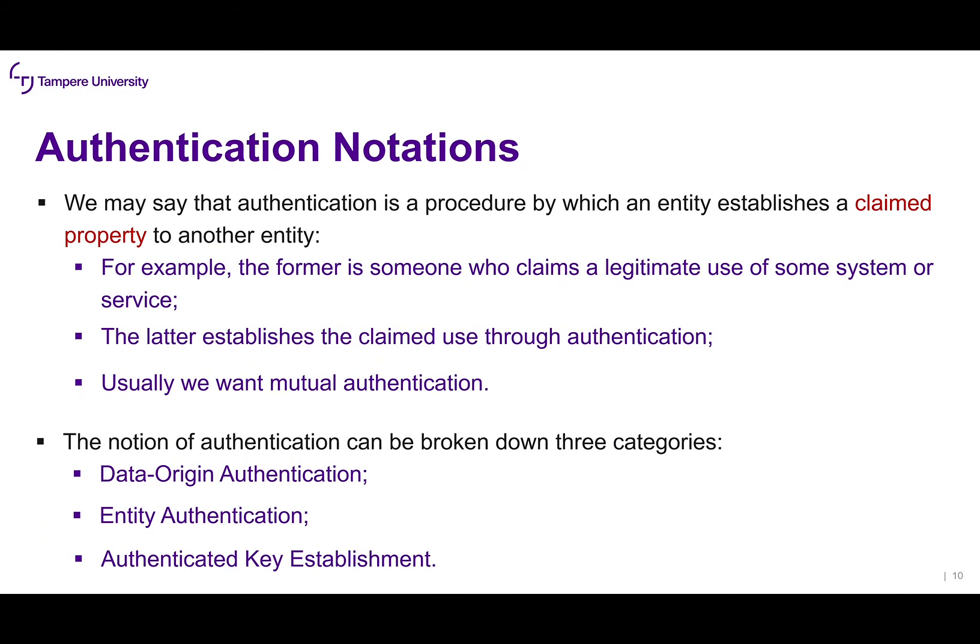Some authentication notations: authentication is a procedure by which an entity establishes a claimed property to another entity. For example, the former is someone who claims legitimate use of some system or service, while the latter establishes the claim through authentication. Usually we need mutual authentication — we'll see this when we describe TLS, for example, how you authenticate to the Gmail server but also how the service authenticates to you. Authentication can be broken down into three categories: data origin authentication, entity authentication, and authenticated key establishment.